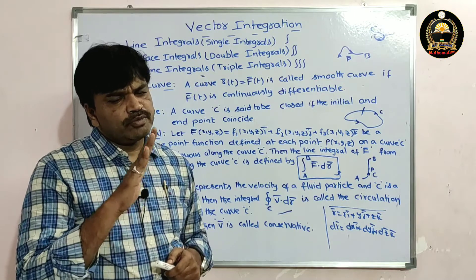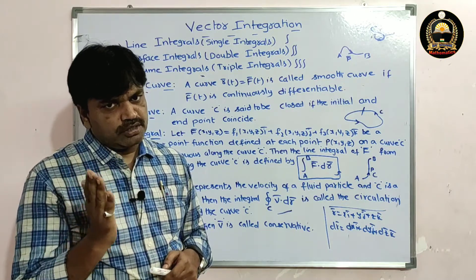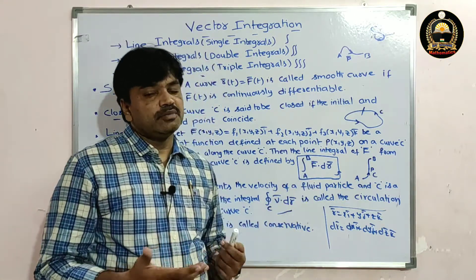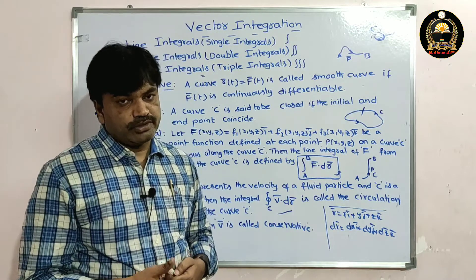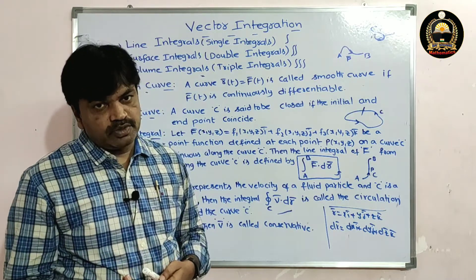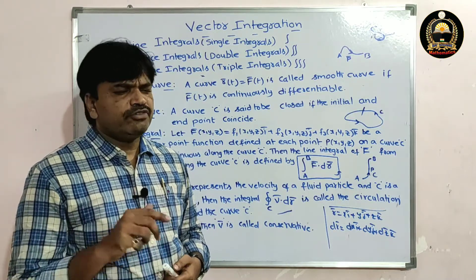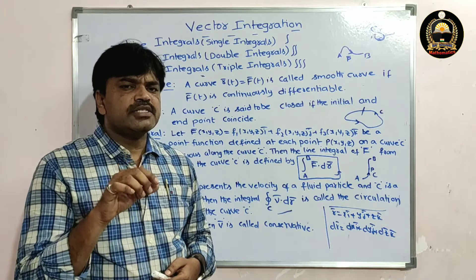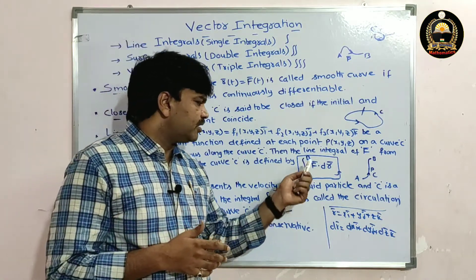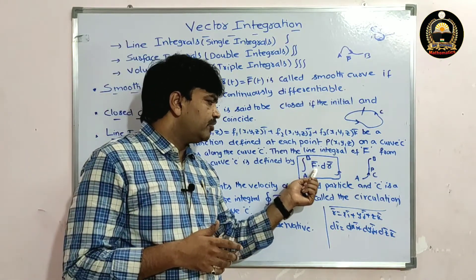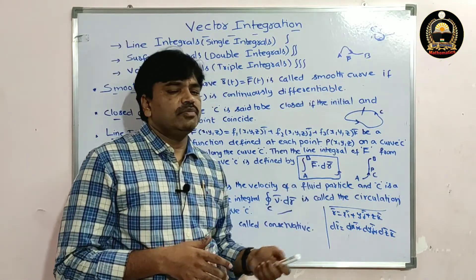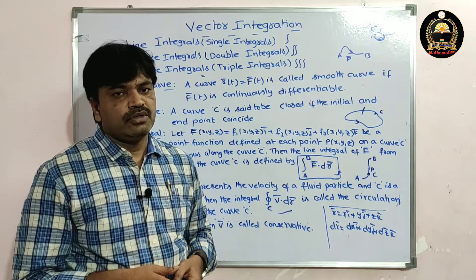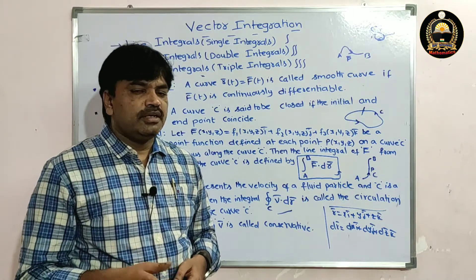There are other forms as well. We can also write f̄ × dr̄ for the cross product form. If f is a scalar point function, then we write f·dr̄ instead.